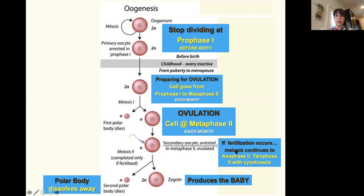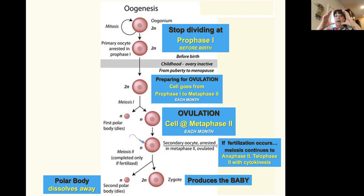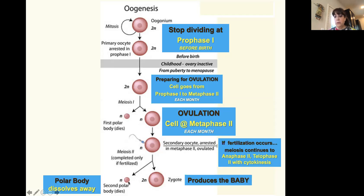At ovulation, if fertilization occurs — if sperm fertilizes the egg — then and only then will the cell finish meiosis. The cell segregates the sperm's DNA to the side, and then the cell divides. When anaphase occurs, the DNA goes to the side with the sperm, and there's an unequal division — one cell is bigger and one is smaller. That small one is called a polar body, and it disintegrates. The bigger cell produces the baby. The polar body donates as many organelles and as much cytoplasm as possible to the bigger cell, because the sperm only donates DNA — no organelles, nothing else.